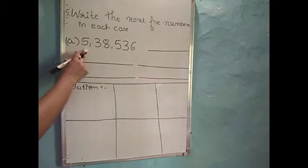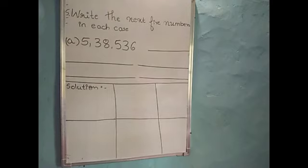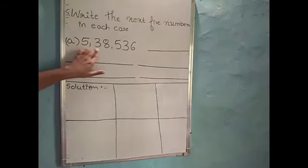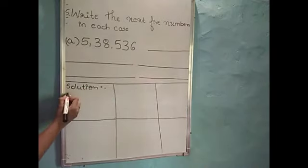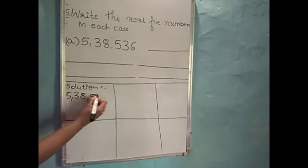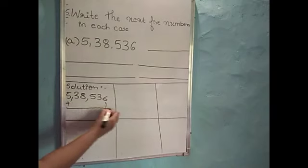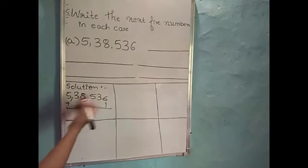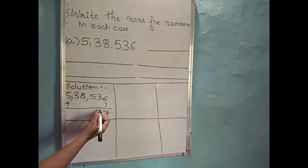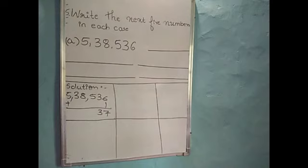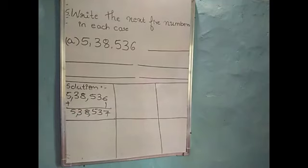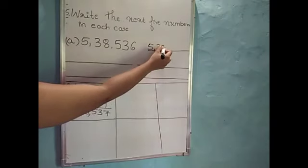So the first one: 5,38,536. Here we have to find out the next five numbers. We should add 1 to the given number to get the next number. So I will write the given number in the solution box: 5,38,536. Adding 1: 6 plus 1 is 7, write 3 as it is, and write remaining numbers as it is: 5,38,537.